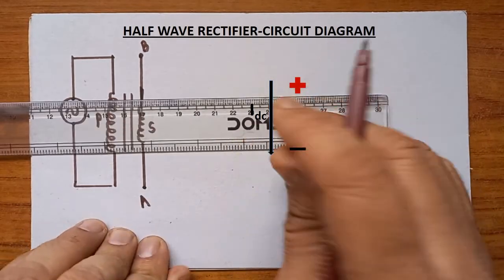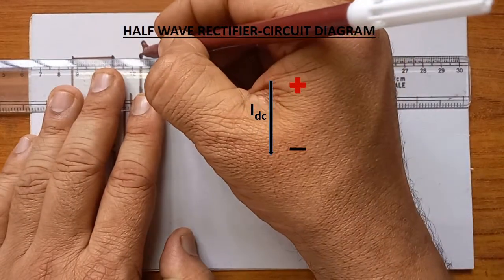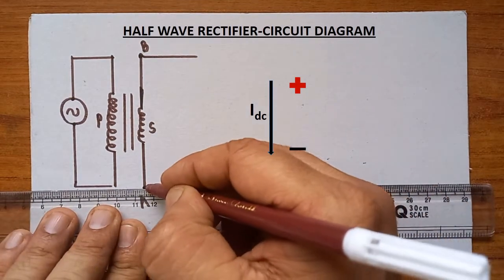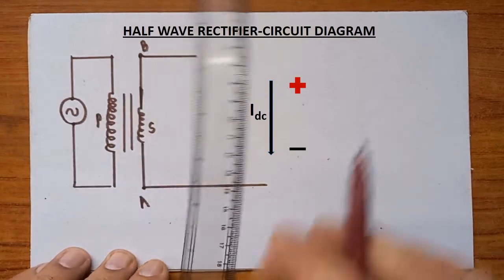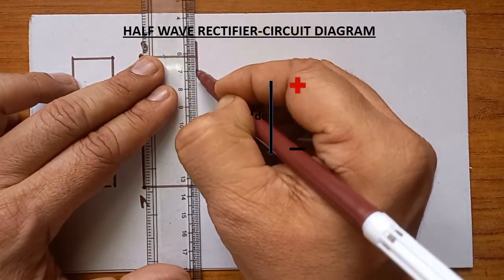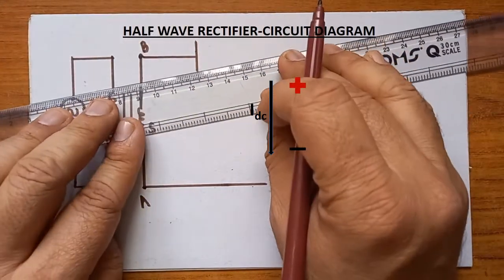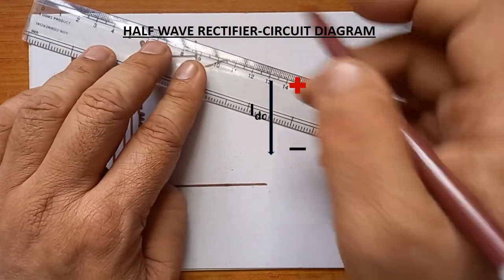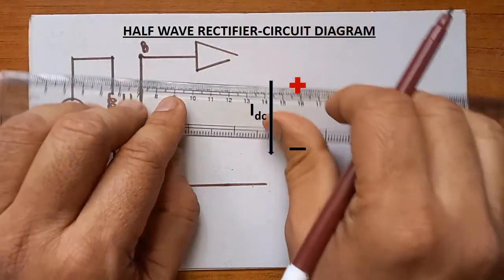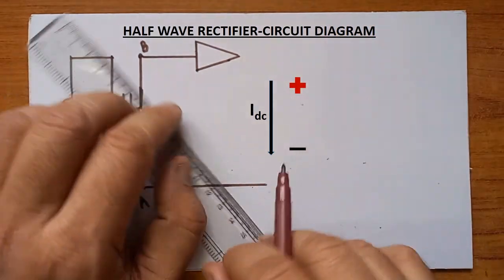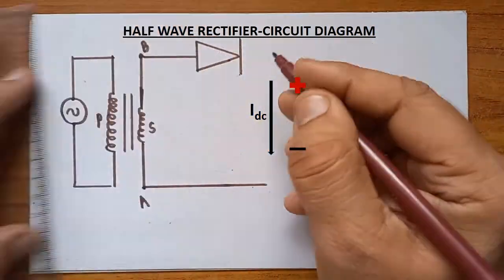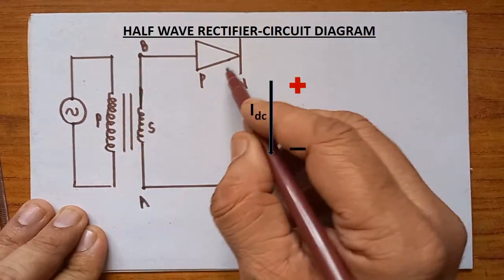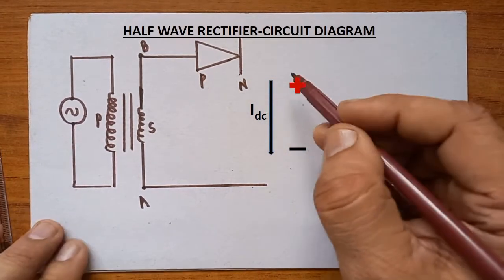Now the most important component in the half wave rectifier is the diode. We have to draw a single diode — it plays a vital role. To draw the diode, we draw the bigger triangular part; that triangle is the P end of the diode. This is the symbol of the diode, and we draw one line at the other end. This is the P end, and this is the N end of the diode. So P must be on this side and N on the other side. The diode is drawn.